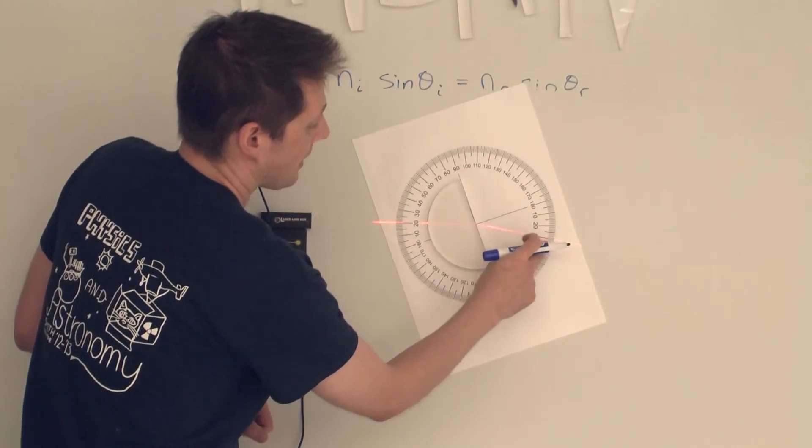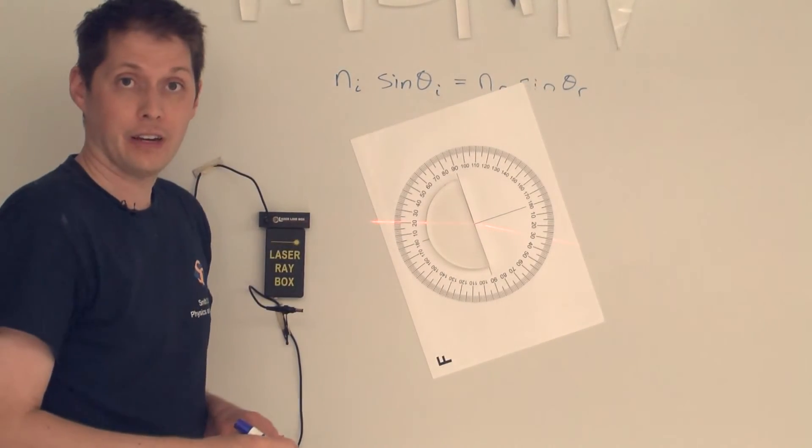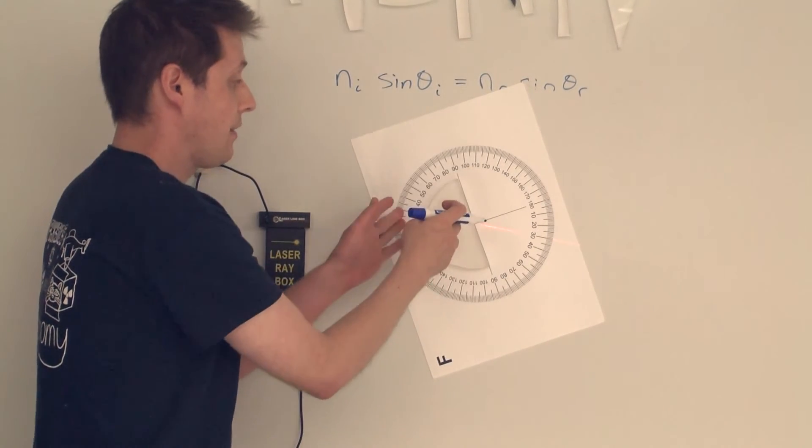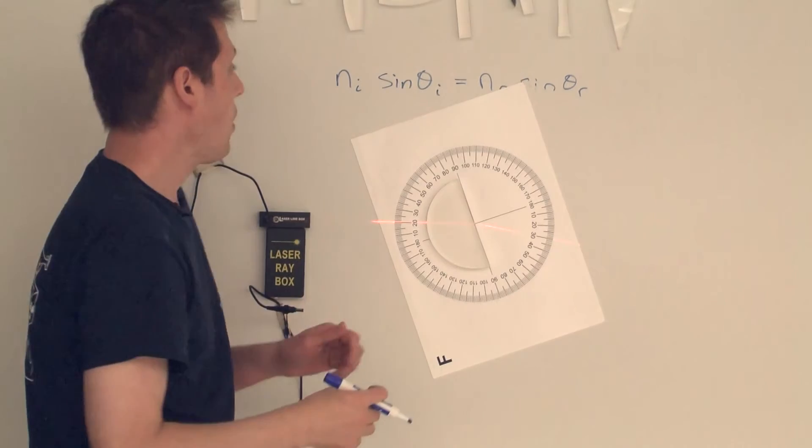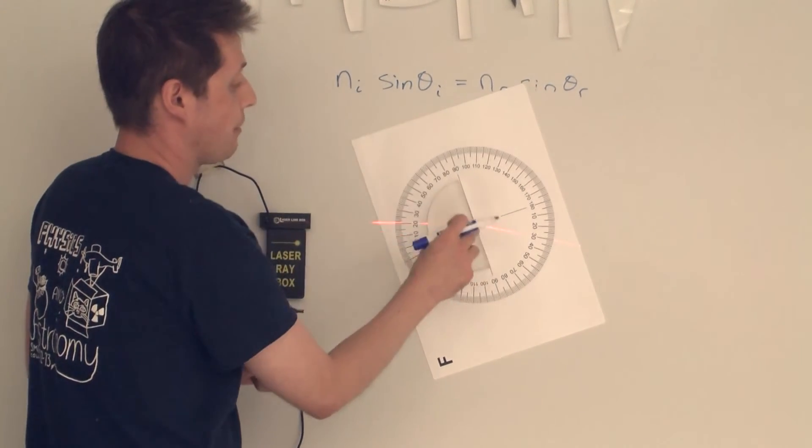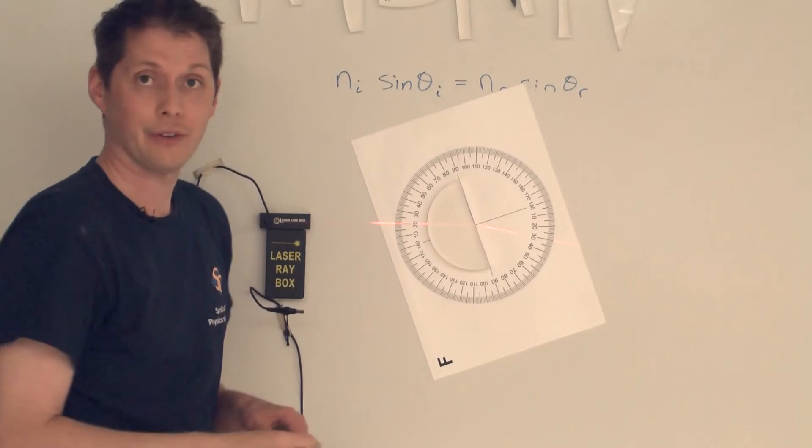then it refracts out at approximately 30 degrees. And so from Snell's Law, we can back out the index of refraction of the plastic, for example, or we can back out and calculate, knowing the index of refraction of the plastic, what angle it's going to refract at.